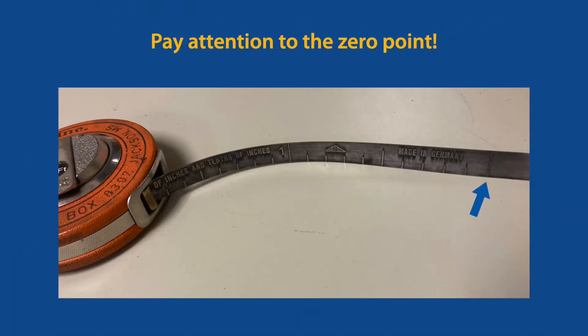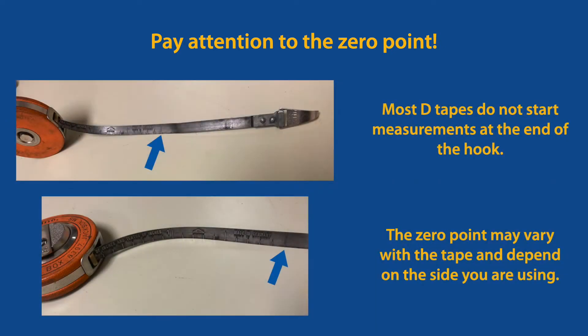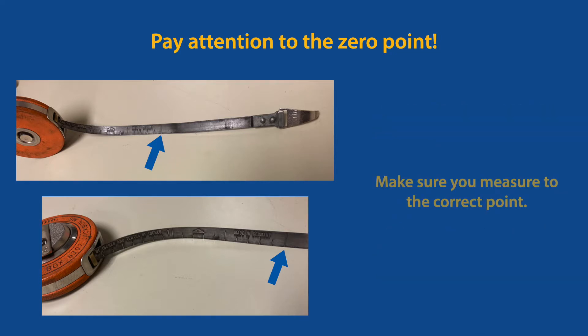Like any measurement tool, when using a d-tape it's important to pay attention to the zero point. On most diameter tapes there'll be a clearly marked zero, but on some the zero point may just be the end of the tape, and it may differ on either side.